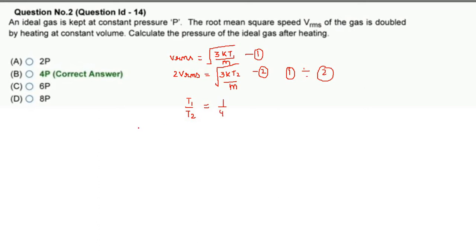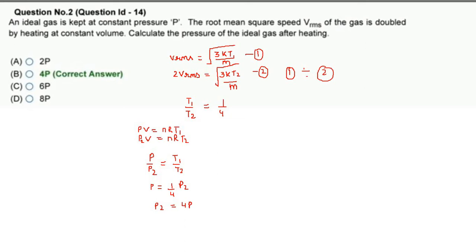Using the ideal gas equation at constant volume: PV = NRT1 and P2·V = NRT2. Therefore P/P2 = T1/T2 = 1/4, which gives P2 = 4P. This is our correct answer.